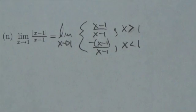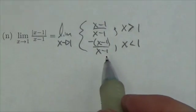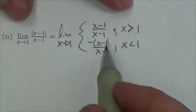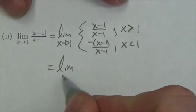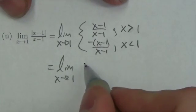But that's okay. A limit can still exist even if the function doesn't exist there, and in this case it won't exist at one, but this will equal the limit as x approaches one of...